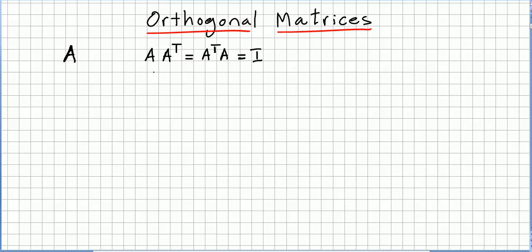Obviously, A has to be a square matrix, and it should also be an invertible matrix. Since this has an inverse, in order for this to work, the inverse should be equal to A transpose.